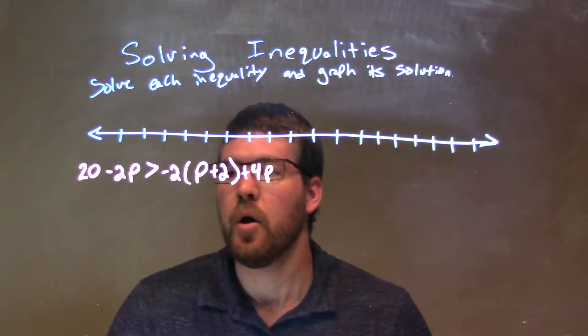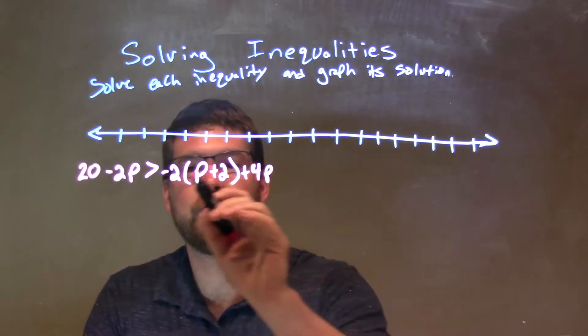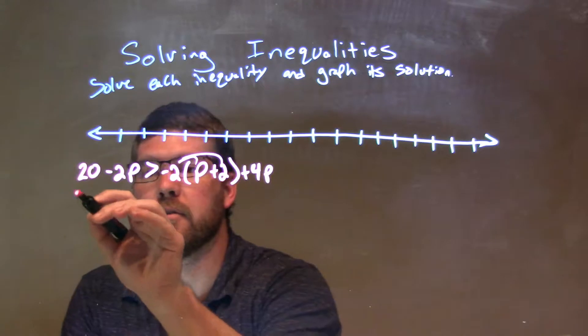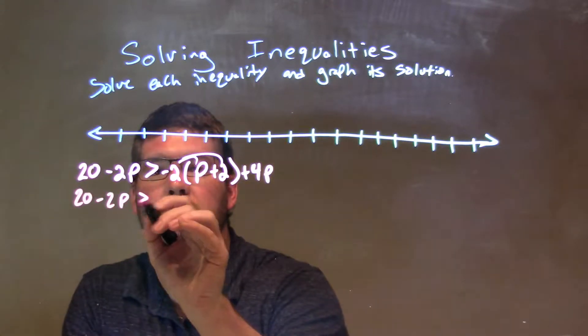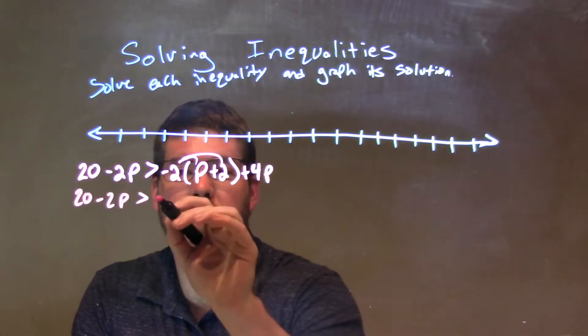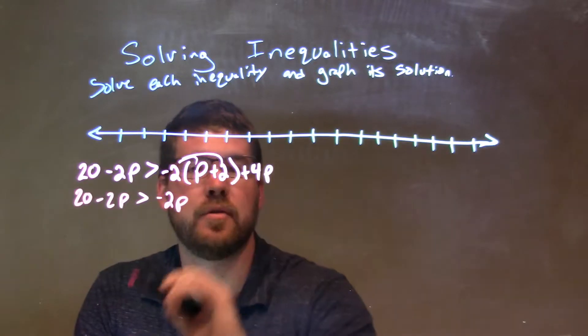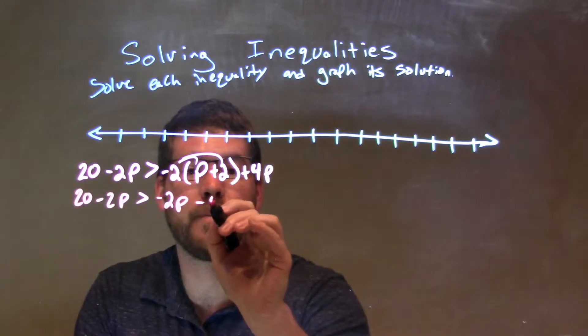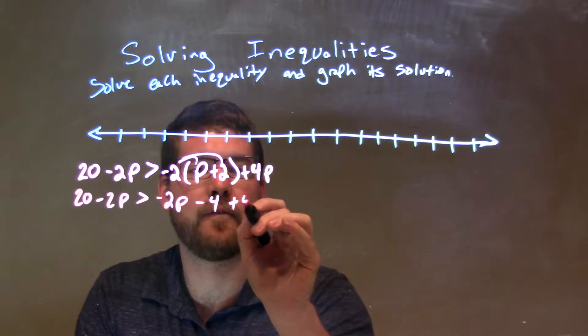Okay, well, what I want to do first is I'd like to distribute that negative 2 across. So, 20 minus 2p is greater than negative 2 times p is negative 2p, and negative 2 times positive 2 is minus 4. Okay, and then we have plus 4p.